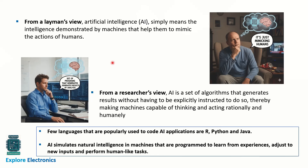From a layman's point of view, AI simply means intelligence demonstrated by machines that helps them mimic some actions of humans. But from a researcher's perspective, AI is a set of algorithms that generate results without being explicitly instructed to do so — meaning machines need to be capable of thinking and acting rationally and humanly. That is the researcher's point of view.